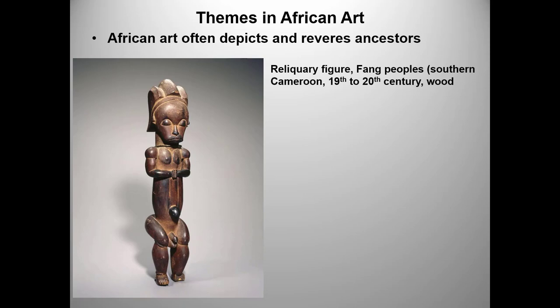The Fang peoples of the Republic of Gabon derive a sense of continuity with their past, as well as communal cohesion, through an ancestral cult known as Bieri. Bieri, or reliquary figures, are placed on top of bark containers that hold the skulls of important clan ancestors. These reliquaries enable a migratory people such as the Fang to carry the remains of important ancestors from place to place. The reliquary figures and the containers were made of light materials so that they were easy to carry.